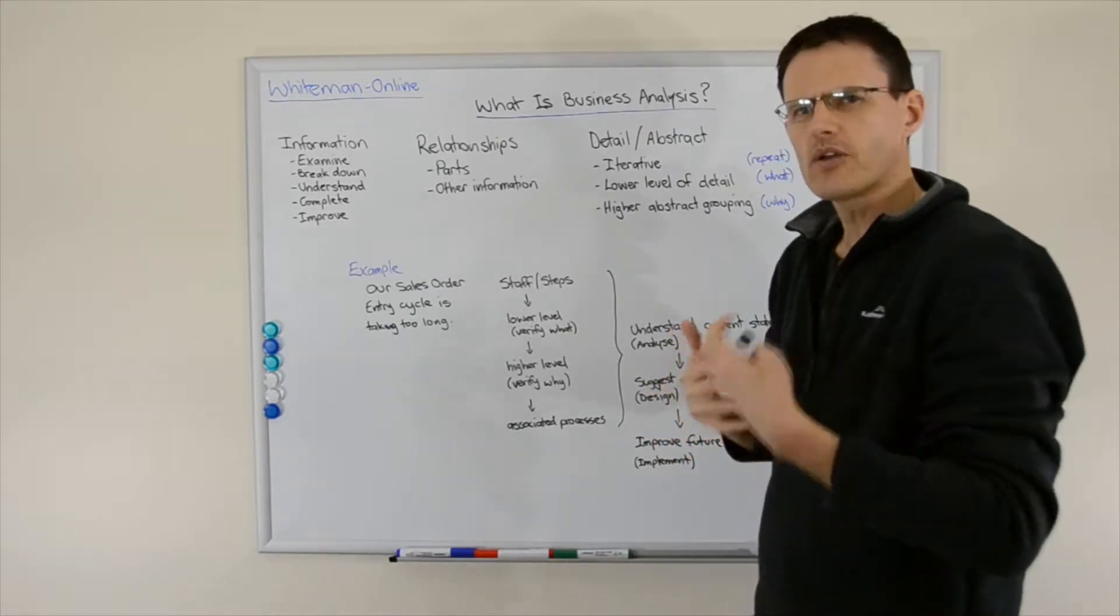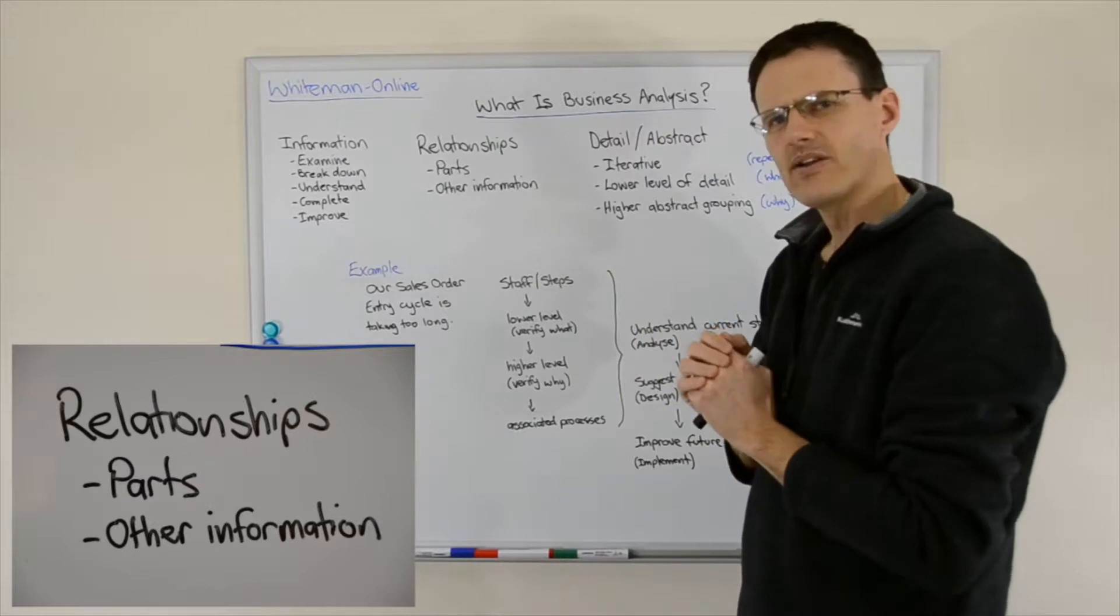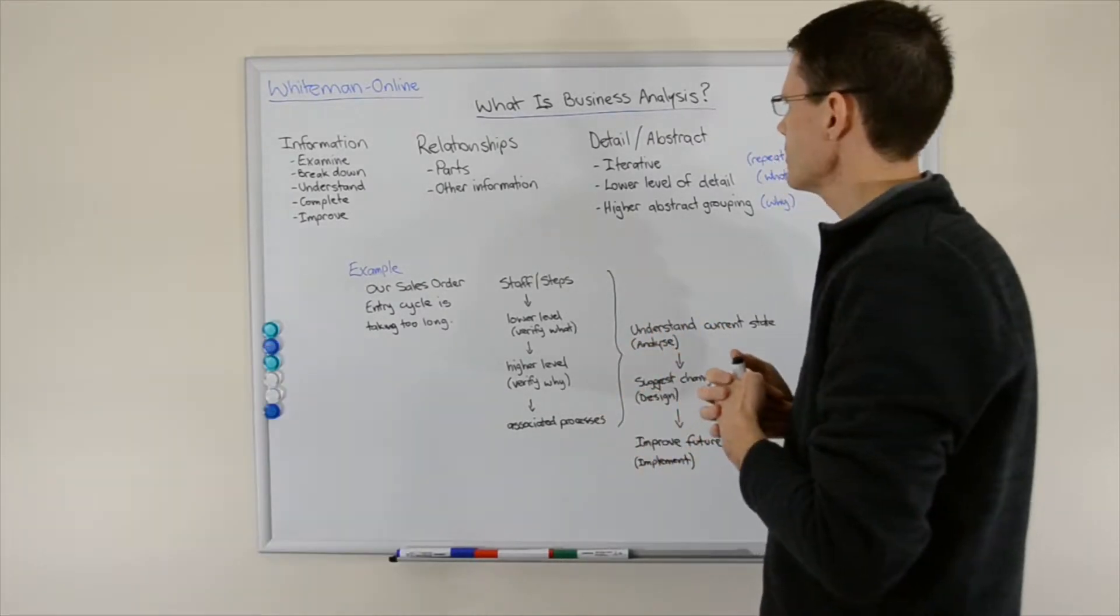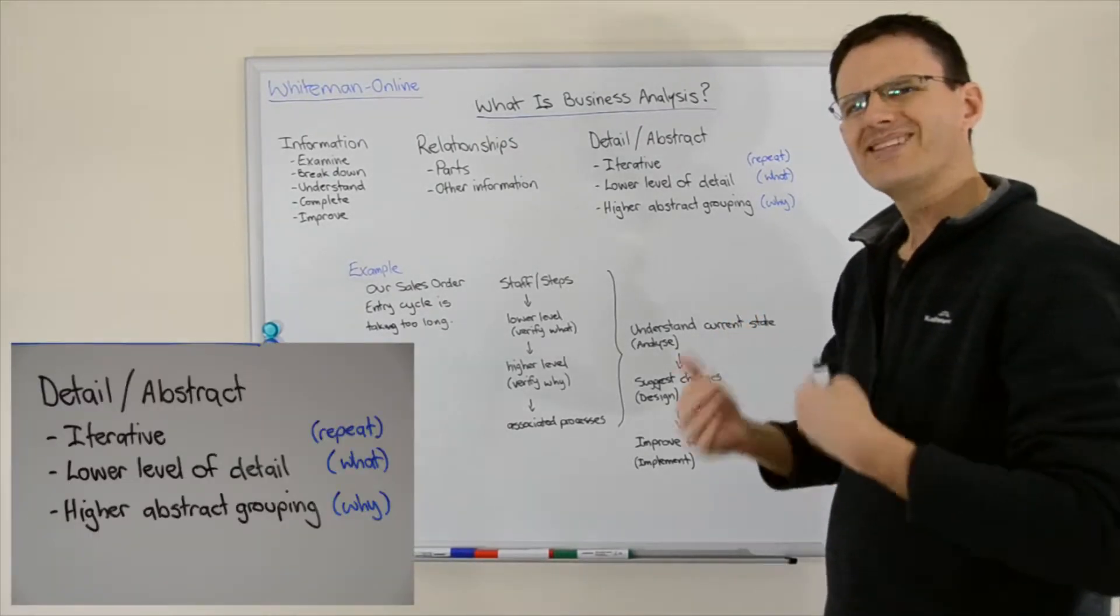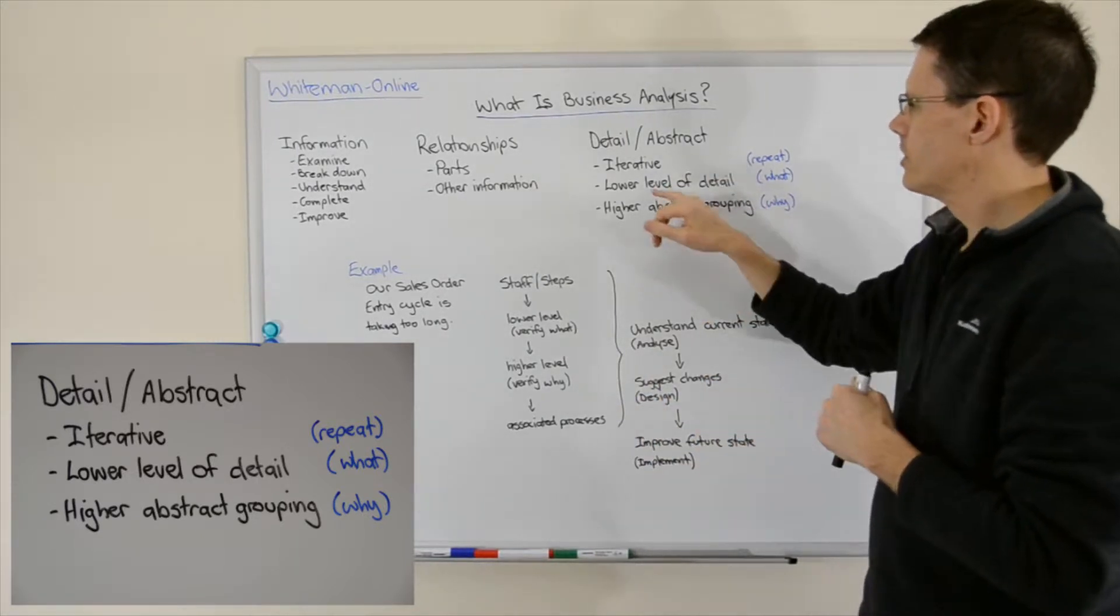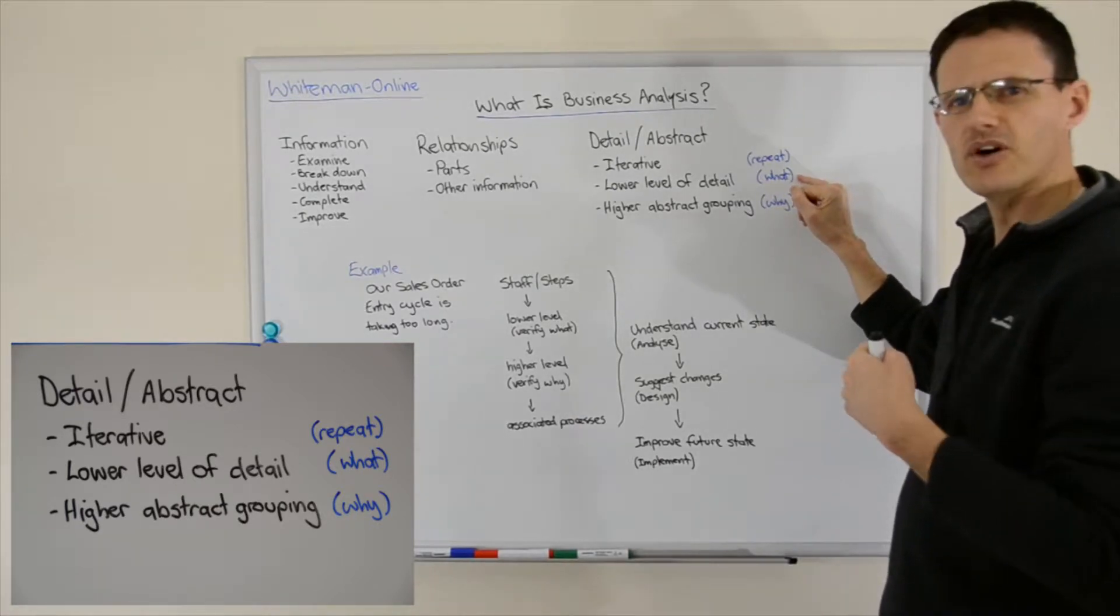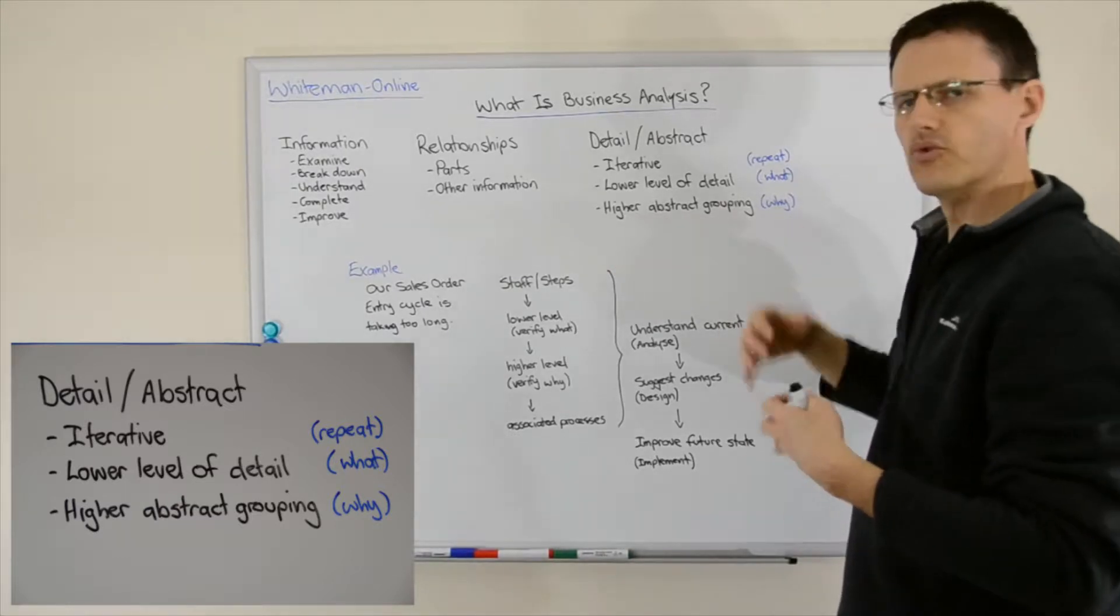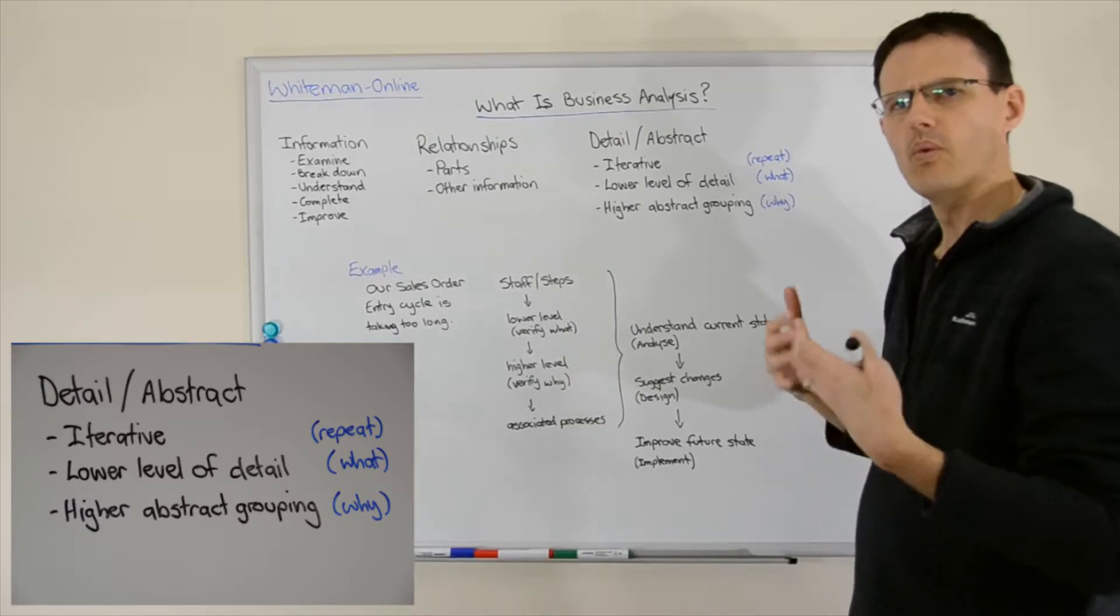So we talk a lot about information, the parts of that information, and the relationship to other related information. What do we do with the information? We repeat it repeatedly, iteratively. So we iterate through lower levels of detail, asking the question of what happens, and then abstracting or grouping together into higher abstract groupings, asking the question of why.